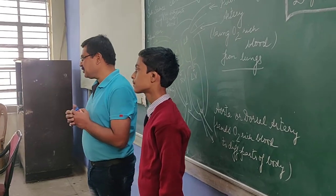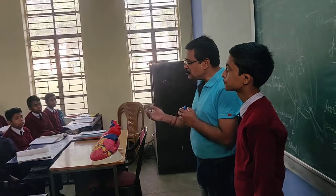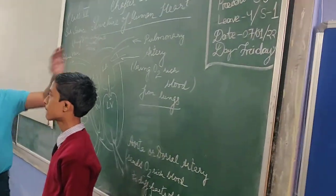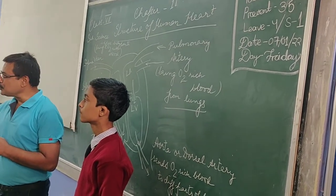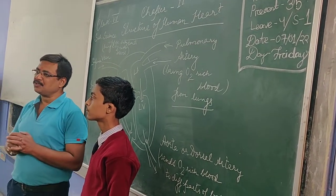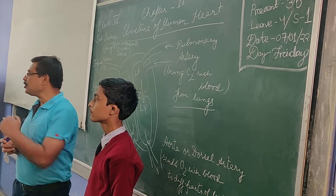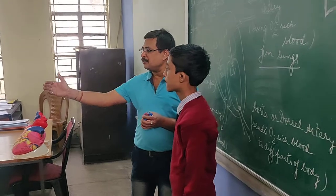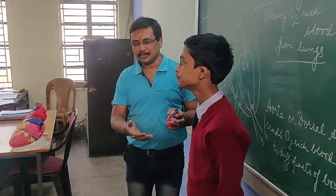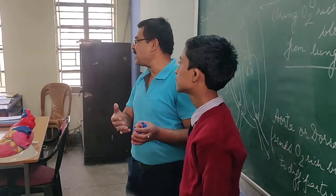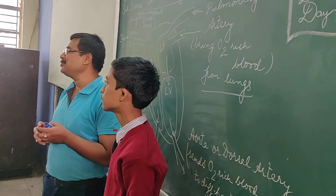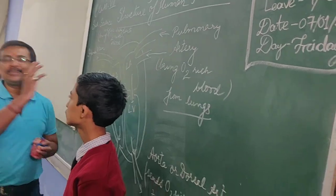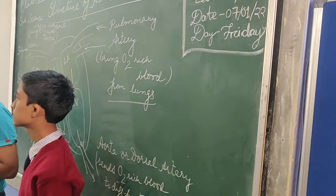Today in class 7th, your science period will cover the structure of the human heart. We will have a demonstration as well as a question and answer session, so it will be a sort of activity. We have one of your friends who will be acting as a demo person, and we will have a smaller heart, a bigger heart, as well as the diagram on the green board.